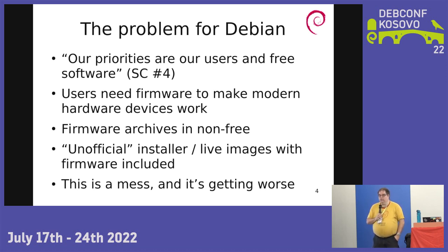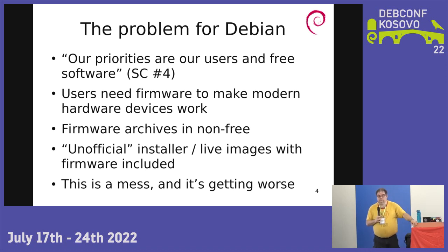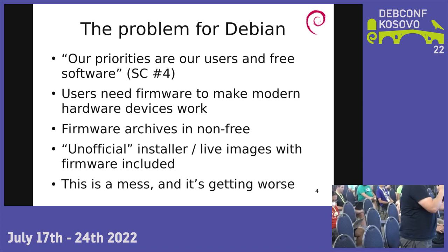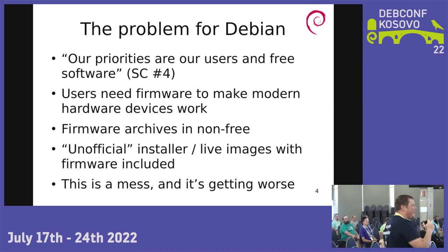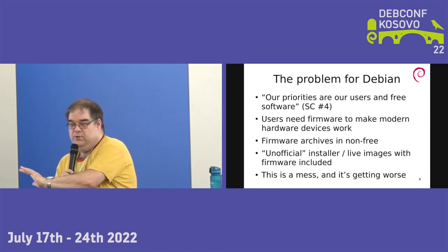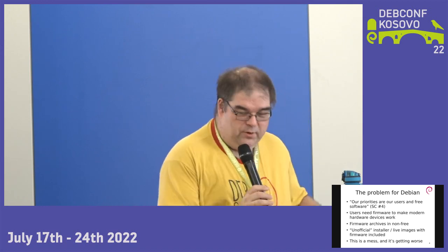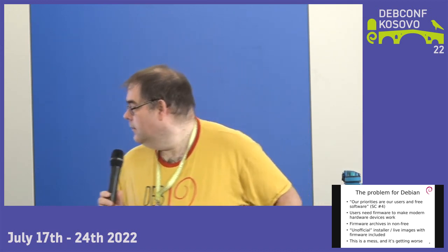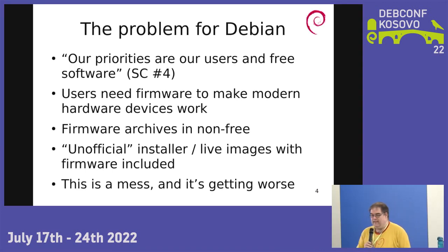These are called unofficial images — they're in a separate path on the CD image server. Steve calls them unofficial because Debian would love for people not to have to use them, but they're prepared by the same team, using the same software, released on the same day, and signed with the same key. The 'unofficial' label means they don't meet Debian's standards. Steve was the person who added the 'unofficial' designation, but admits the current situation is a mess and getting worse.